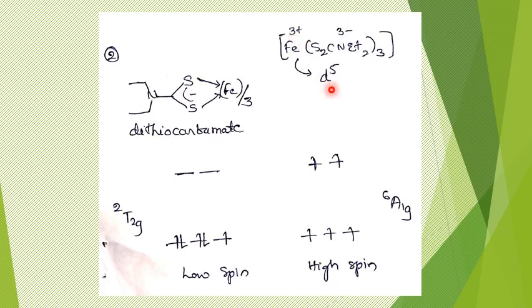If it is a d5 system, distributions for low spin and high spin: it will be with one unpaired electron for low spin, and for high spin it will be with five unpaired electrons. Even if you are not identifying this correctly, at least options can be eliminated just by looking at the fact that here you have five unpaired electrons and the corresponding spin multiplicity should be sextet. Here it will be one unpaired electron with spin multiplicity of two. Based on that, you can remove options.